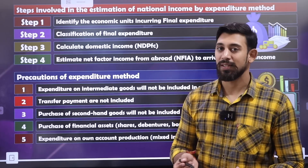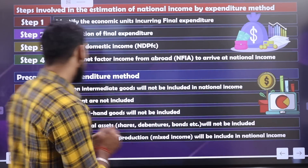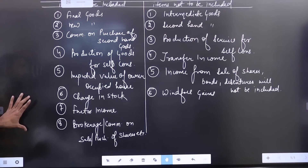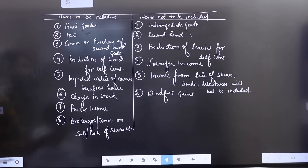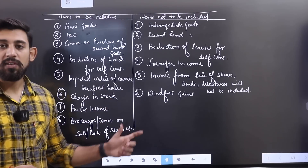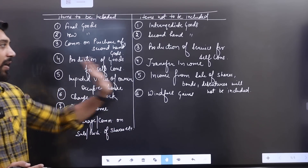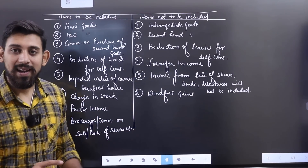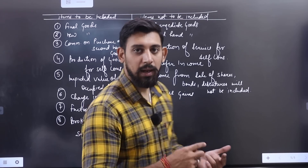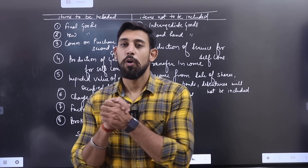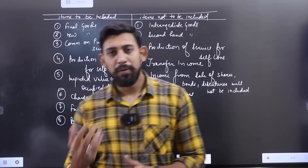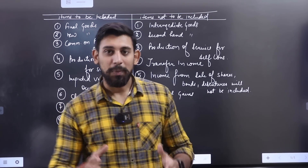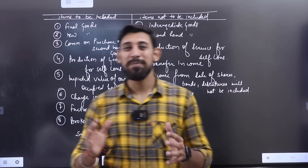So all three methods — value added, income, and expenditure — and their precautions are now complete. I hope you understood today's class. The chart we made will help you solve all 'items to be included and not included' questions. In the next class, I will cover real GDP, nominal GDP, and GDP and welfare — which will be a very interesting and understanding-focused class. I will meet you in the next class. Till then, take care. Bye-bye. Keep growing.